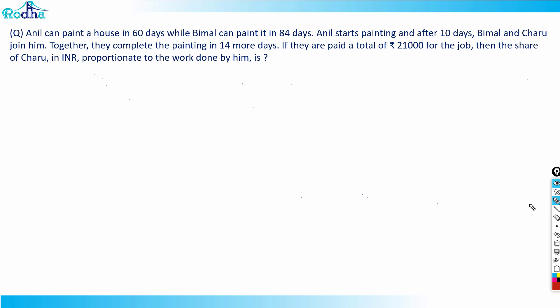Hi guys, let's look at this question from CAT 2021 Slot 2 — a fairly moderate level question, should be in the easy category if you have practiced work problems. Anil can paint a house in 60 days while Bimal can paint it in 84 days. Anil starts painting and after 10 days, Bimal and Charu join him, and they complete the painting in 14 more days.